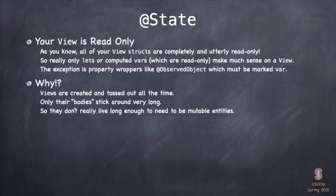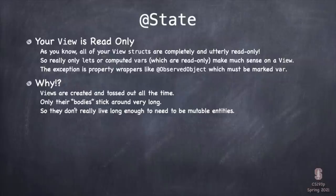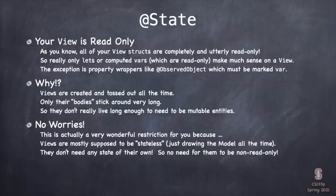Why are our views read-only like this? Views are actually created and thrown away all the time. The bodies of the view stick around — if a body of a view is on screen, then it exists somewhere. But the view that made that body has probably long ago been thrown away. These view structs don't really live long enough to have any mutable vars on them. This is not a problem because views are supposed to be stateless — drawing what's in the model, they don't need any state of their own.